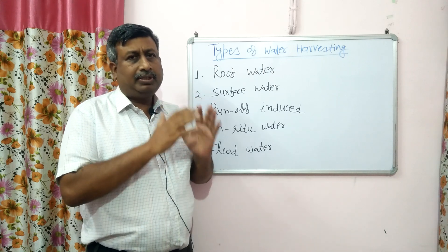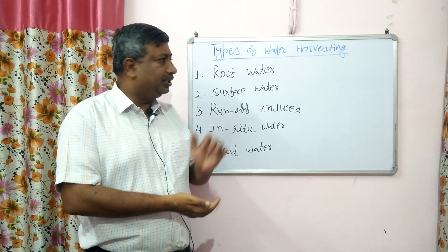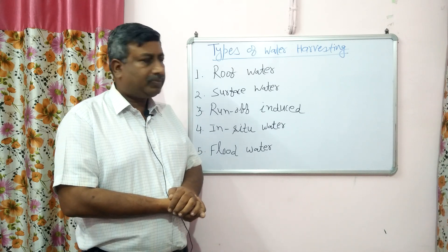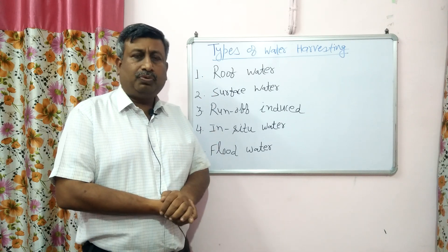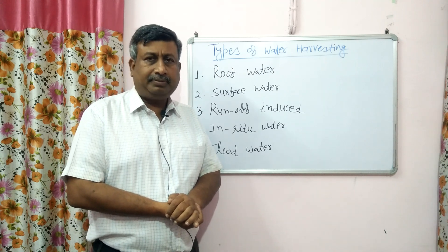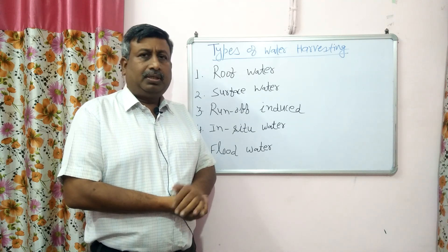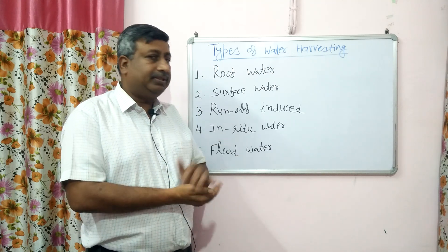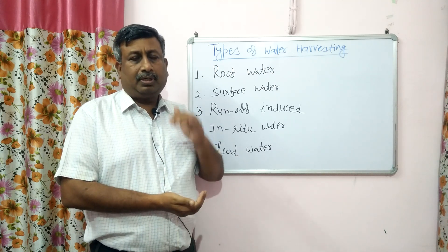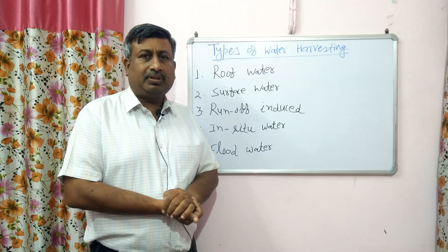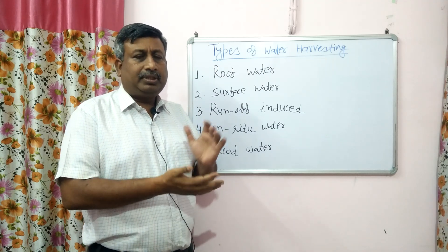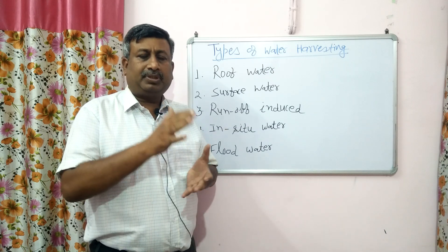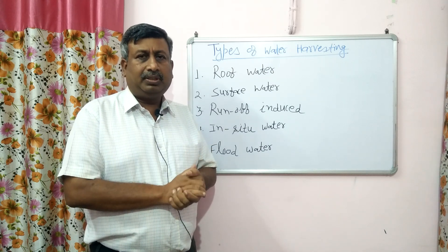In all water harvesting cases, rainfall is collected. As far as roof water harvesting is concerned, rainfall is directly collected, while in other cases, the excess water above the soil surface which is known as runoff is collected. So in roof water harvesting, the water present on the roof from rainfall is collected.